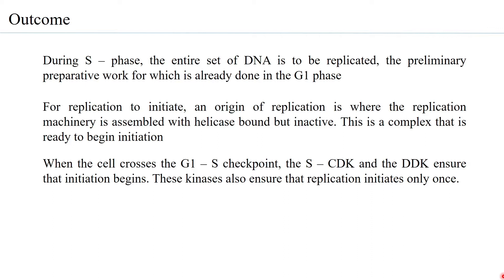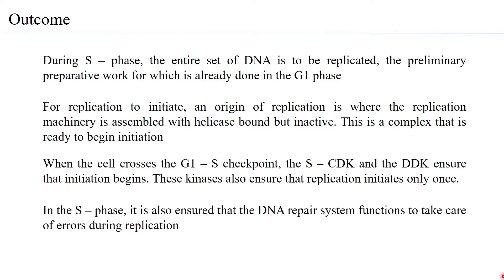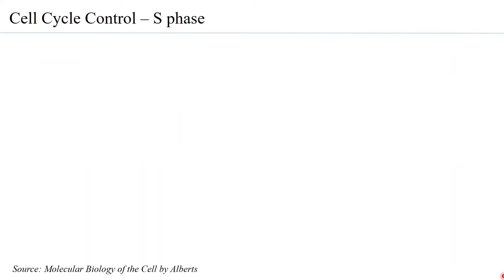This is an important control needed during the S phase. It is also ensured that the DNA repair system functions to take care of errors that occur during replication. So when you look at cell cycle control in the S phase, there are two challenges.